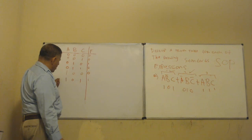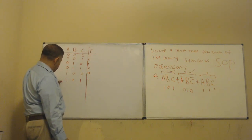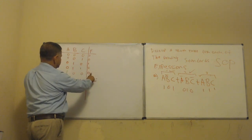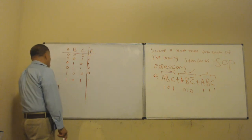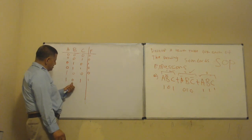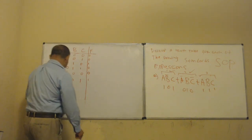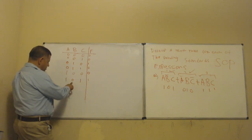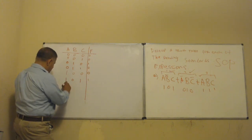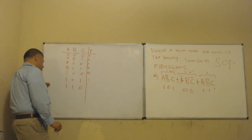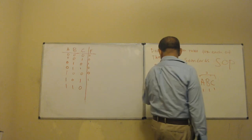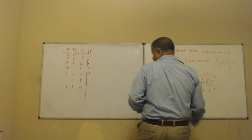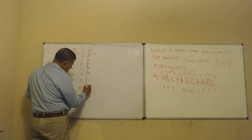Now the next row — we change to one, one, zero. Do we have anything with 1,1,0? Nope. The only term I'm looking for that matches is that one. This row I'm filling out just to complete the table — output is zero.